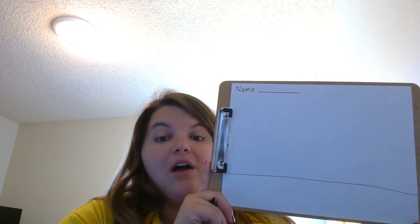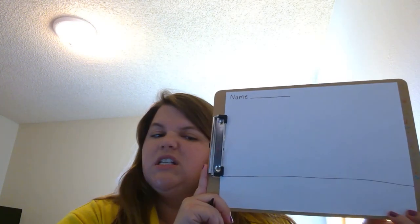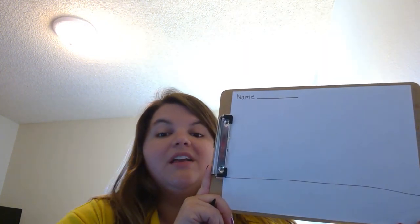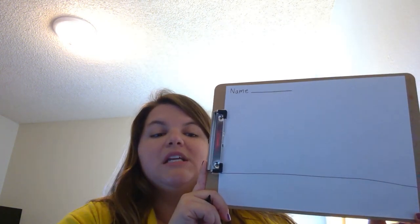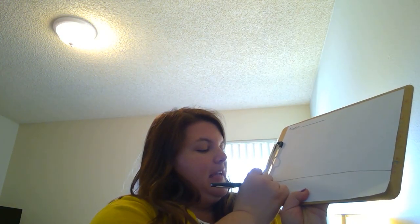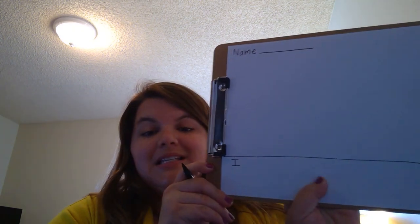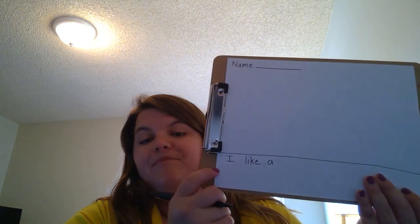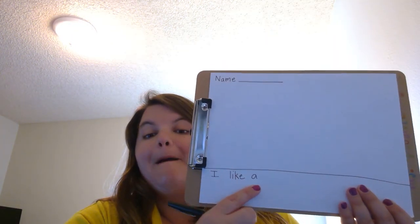We're going to use our sounds to write our sentence, so we don't need to copy it from anyone or ask anyone how to spell it. Parents, please trust me — inventive spelling is totally perfect. We want them to hear the sounds. So just like we would in class, starting with 'I' — I need a capital because that's the beginning of my sentence. 'I like' — that's a sight word, so I'm going to put my finger space and write my sight word: 'like.' Then 'I like a' — finger space — that's a sight word, so I know how to spell it.